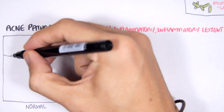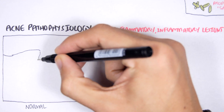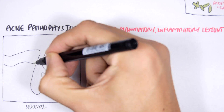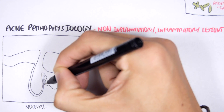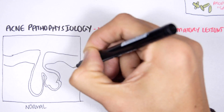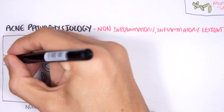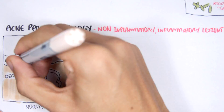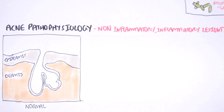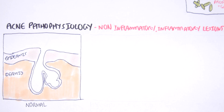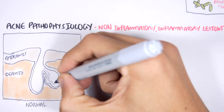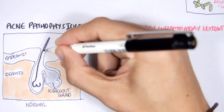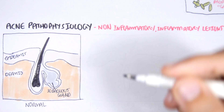Let's have a look at normal skin first. Here is the epidermis — the top layer — and the dermis. Here is our sebaceous gland that contains and produces sebum, which will lubricate our hair follicles.